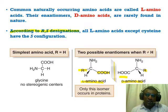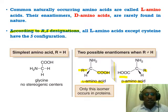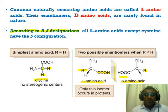To have L or D amino acid, you must have a stereogenic center. An example of something that does not have a stereogenic center is glycine — its central carbon is attached to two hydrogens. Therefore, glycine does not have a stereogenic center, which means there is no D or L form for glycine.